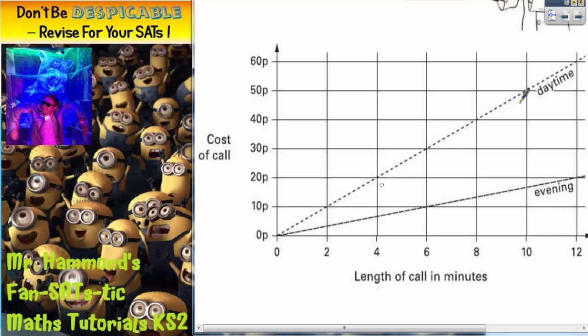So you've got the dashed line here is for the daytime and this dashed line here is for the evening. We've got the length of call in minutes: 2 minutes, 4 minutes, 6 minutes, 8 minutes, 10 minutes, 12 minutes, and we've got the cost of the call up the side.